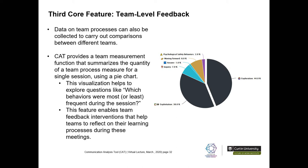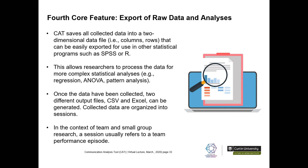In terms of team level feedback, data on team processes can be collected to carry out comparisons between different teams. The CAT provides a team measurement function that summarises the quantity of coding for a particular session using a pie chart, helping to explore which behaviours were most or least frequent. In the expert panel meeting example, exploration and exploitation were the most frequently used codes throughout the session. The CAT also saves all collected data into a two-dimensional data file that can be exported into statistical programs such as SPSS or R for more complex analyses.